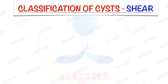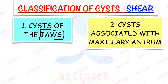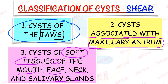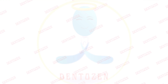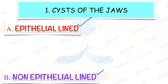Now we come to the classification of cysts. Shear gave a classification of cysts according to which pathological cavities may be present in the jaws — known as cysts of the jaws — or they may be present in the maxillary sinus, or they may be present in the soft tissues of the mouth, face, neck, and salivary glands. The most important category for us is the cysts of the jaws. These can be lined by epithelium or they can be non-epithelial lined, which are called pseudocysts.